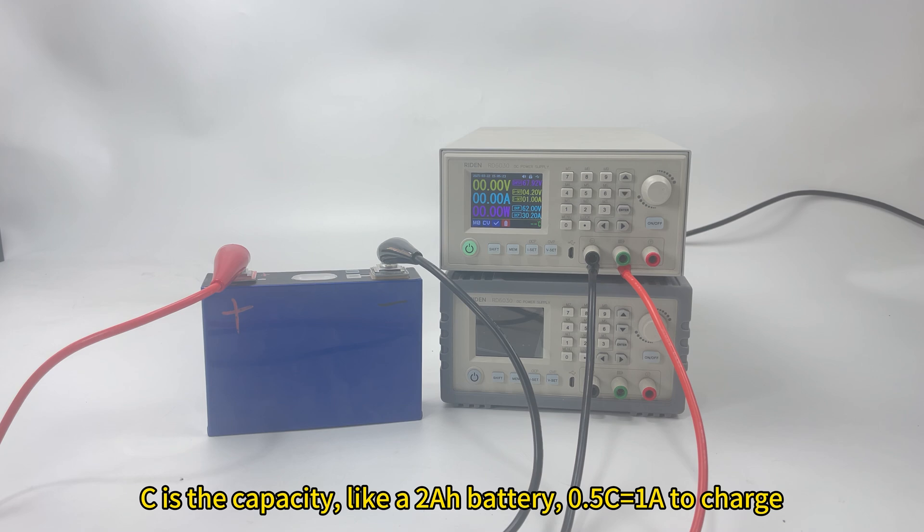Like a 2 ampere hour battery, then 0.5C is 1 ampere to charge.